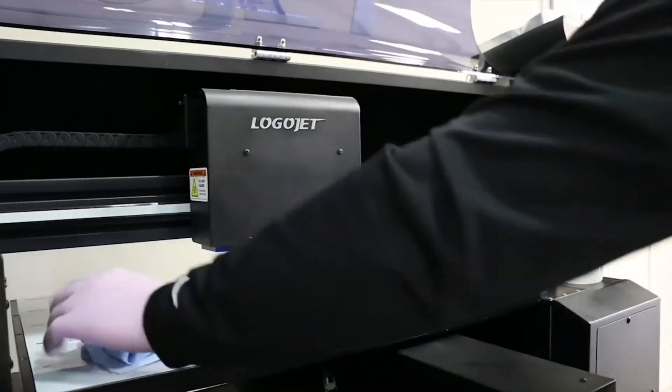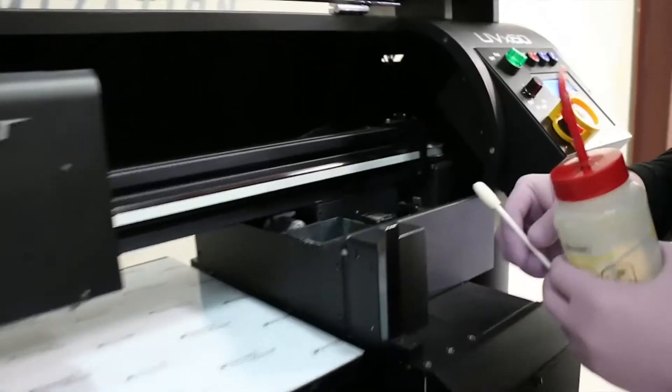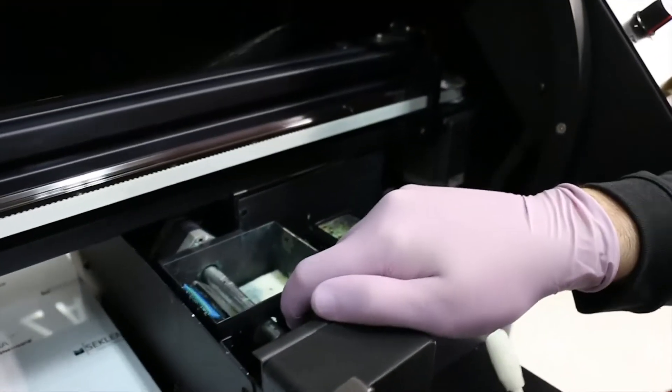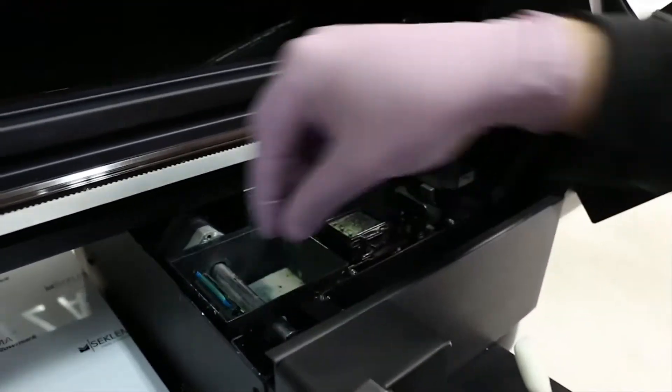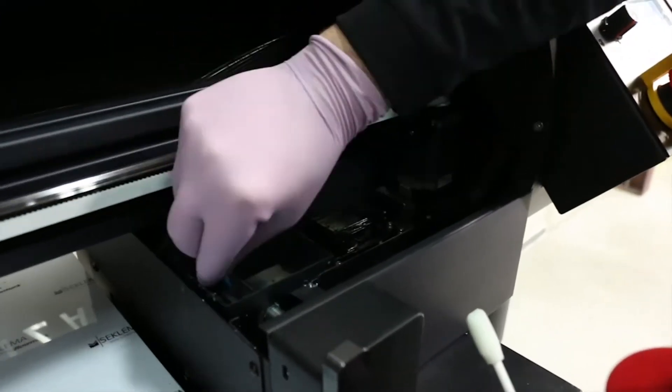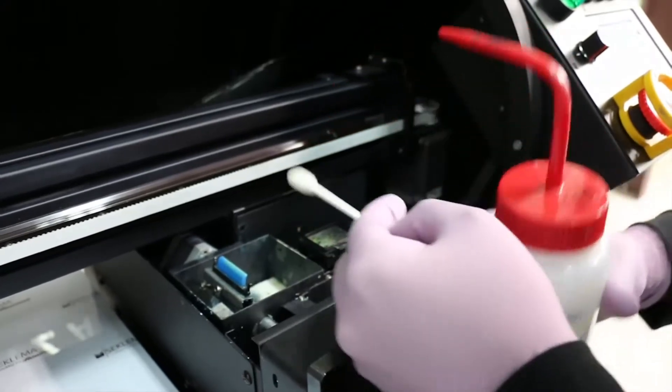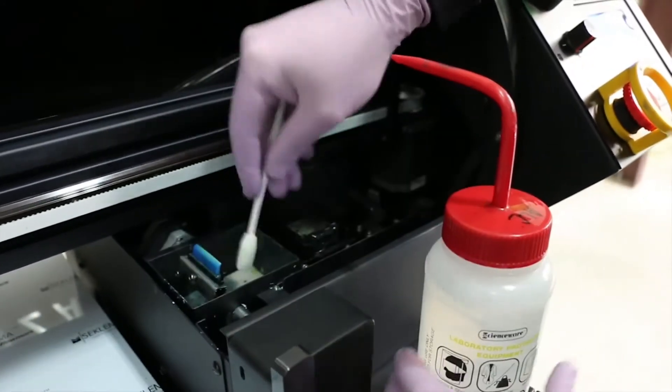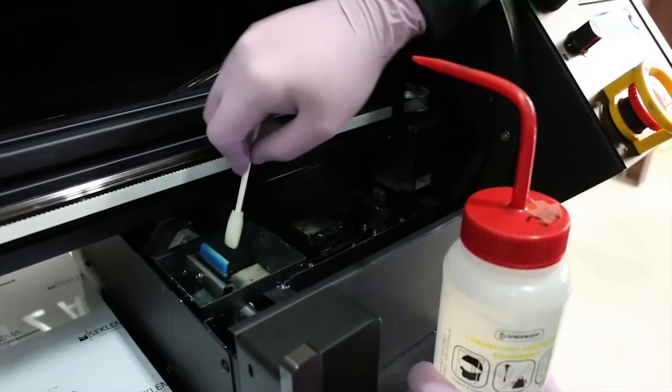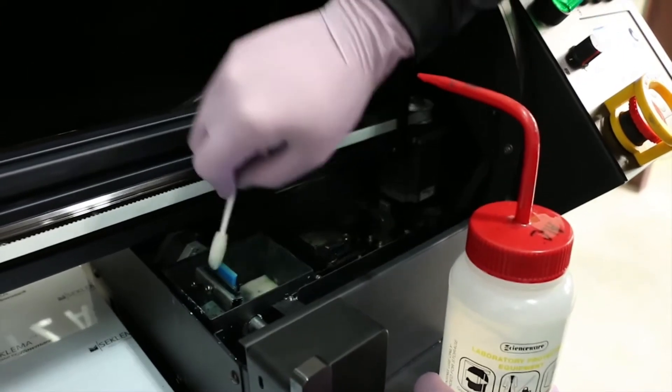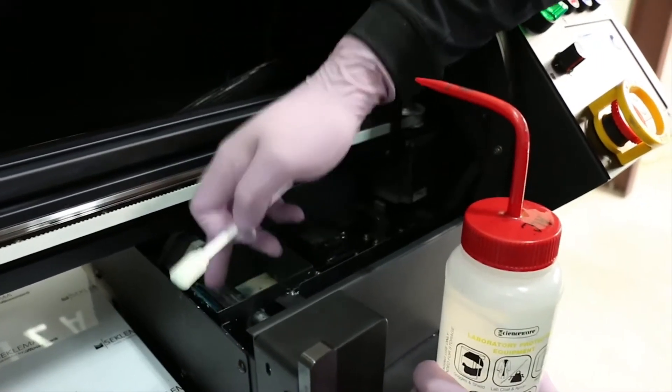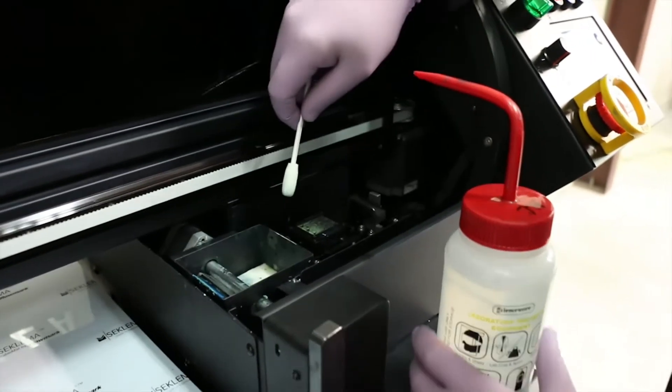The next thing we're going to look at is our capping station area. Here, we're going to clean the wiper blade first. You can move it up just by pushing down on this little rod, or you can just grab it and pull it where you need it. To clean this, we're going to put some alcohol on the swab and clean the back side and the front side of the wiper blade, making sure to get all ink off of it. Then we can rotate it back down into the proper position.